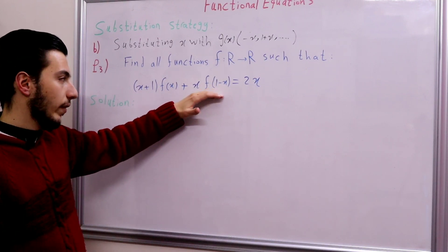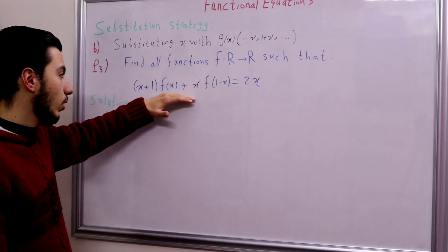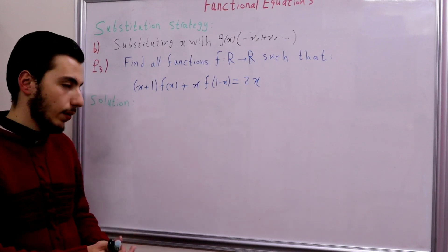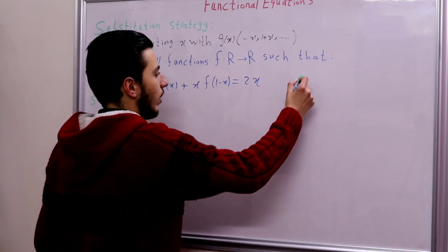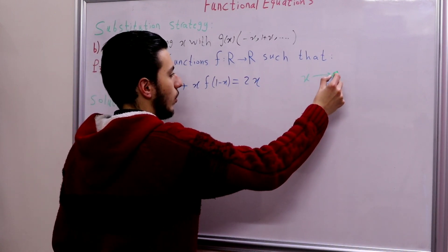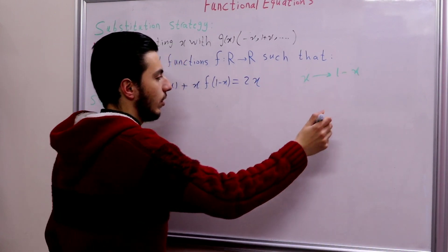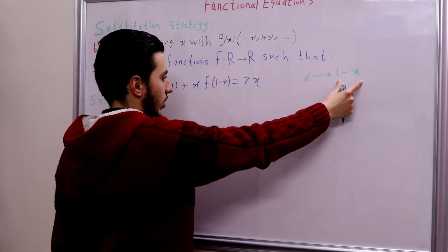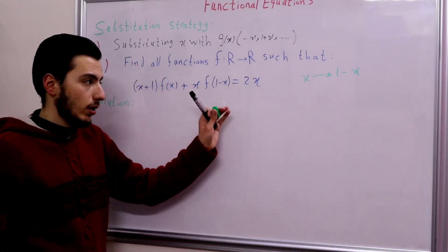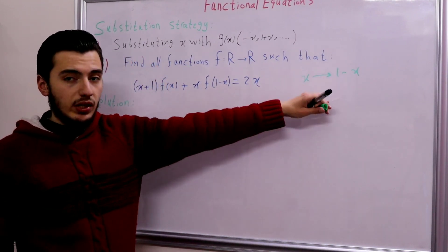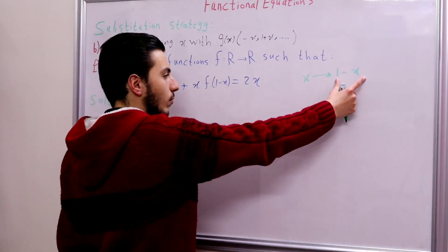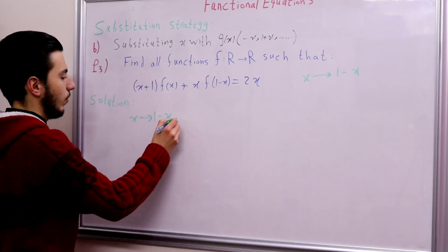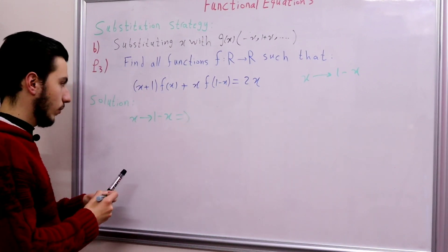So if we know the value of f(1 − x), then we can conclude the value of f(x) using this equation. The idea is: since x is linked to 1 − x, in order to know f(x) we need to know f(1 − x). So simply let's substitute x with 1 − x in order to find that value.